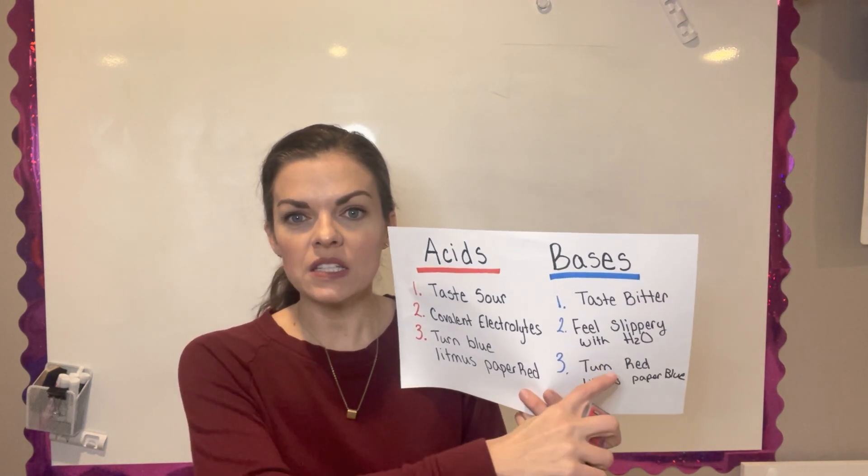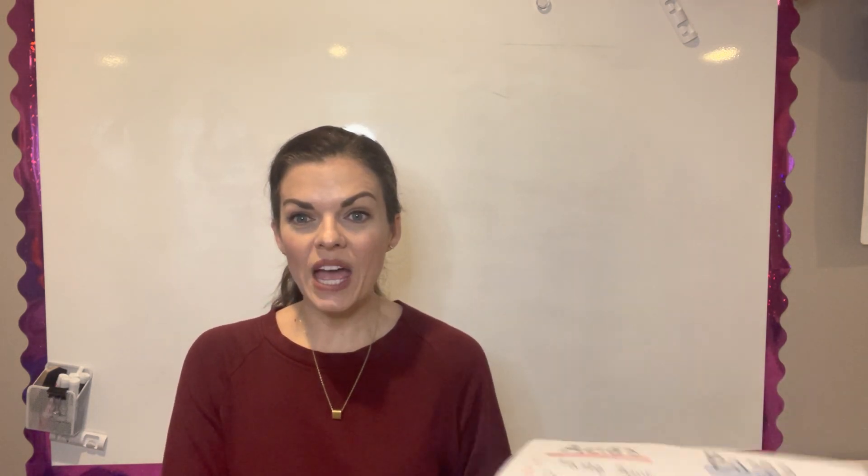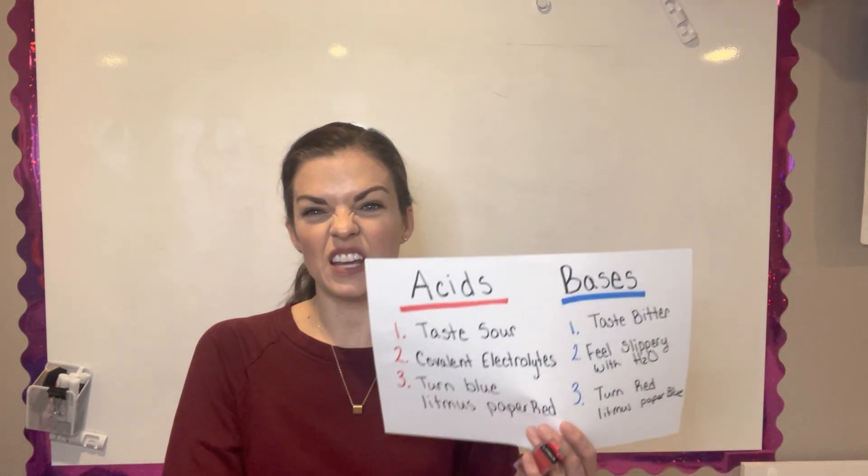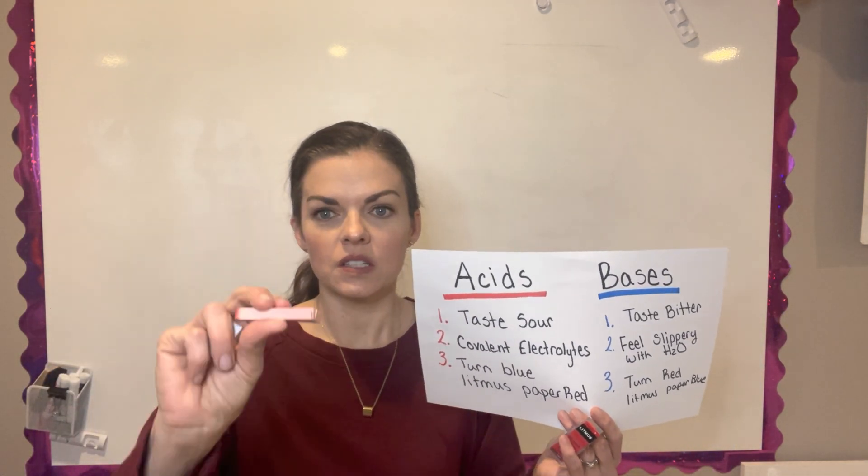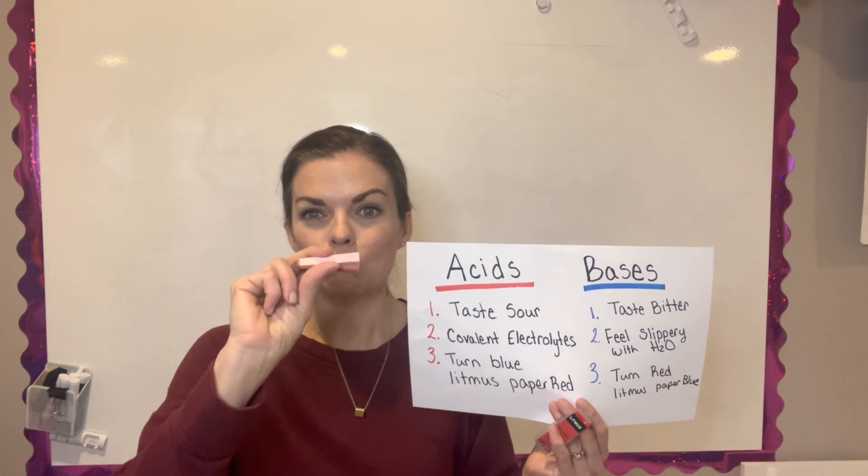Base does the same with litmus paper, but the opposite. It turns red litmus paper - they call it red, but it really looks pink, this pinkish color. And if you put a base on it, it will actually turn the paper blue.